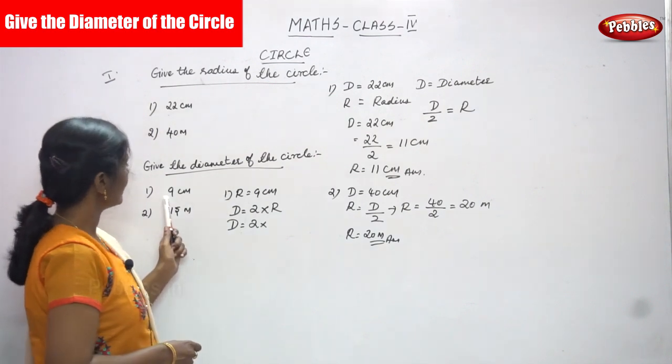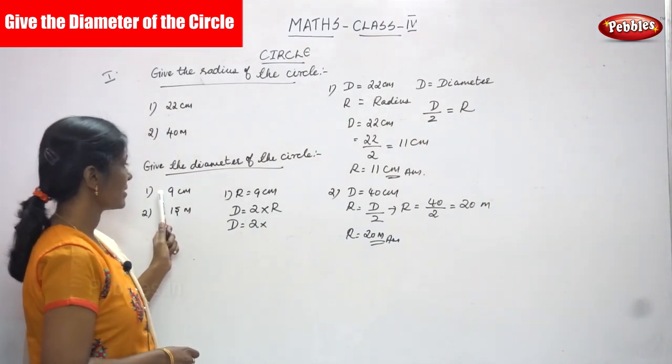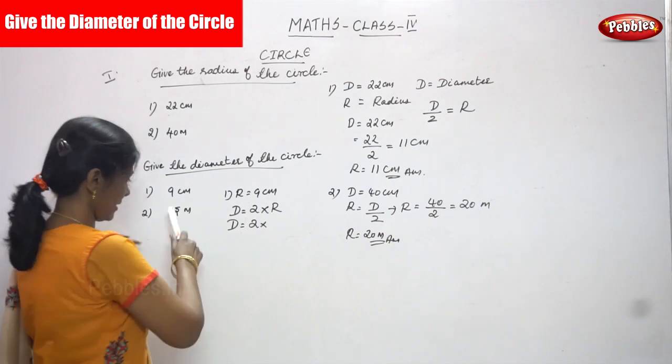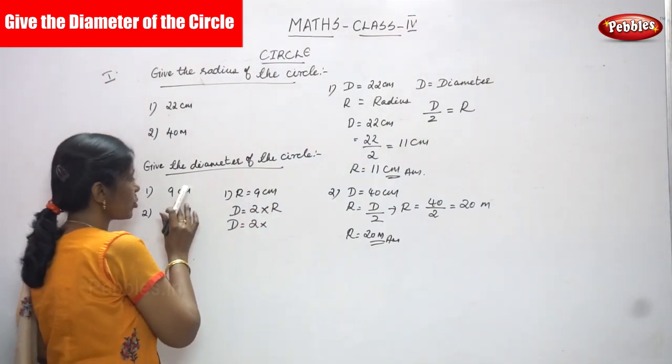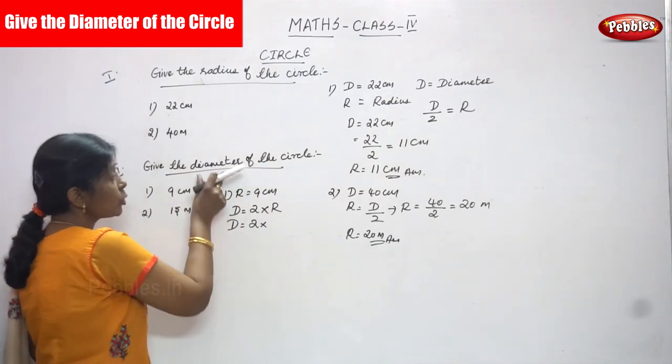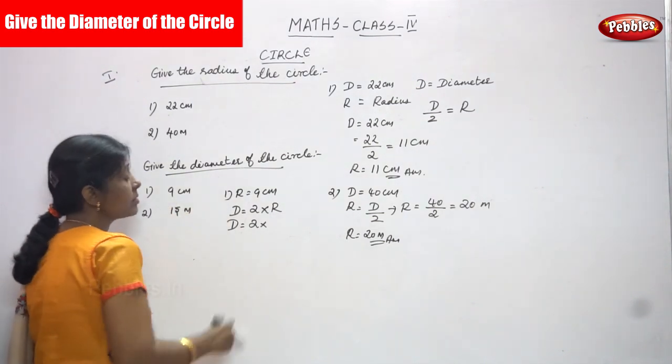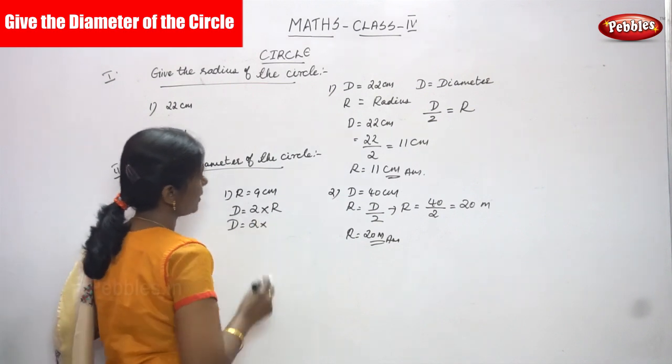Give the diameter of the circle. You must consider this 9 centimeter as a radius. So give the diameter of the circle means this 9 centimeter you consider as a radius because r is equal to 9 centimeter. You have to find out the diameter. So d is equal to 2 into r. This is the formula.